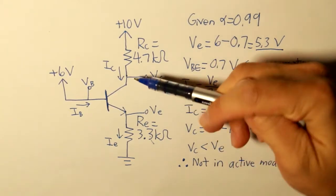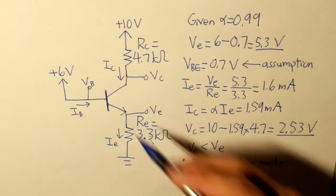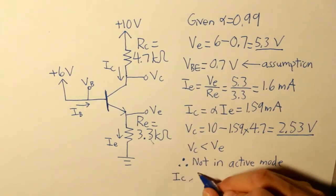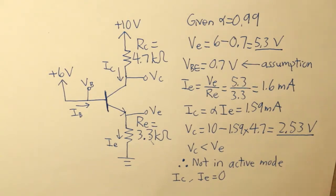It's not in active mode because VC is smaller than VE. Therefore, the rest of our current, IC and IE, is all equal to 0. The BJT is open and the switch is off. So that is our second example, and I hope you guys understand these examples, these two examples that I covered.